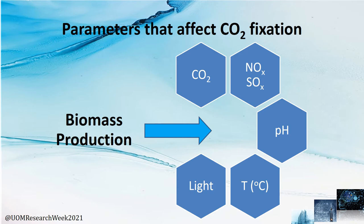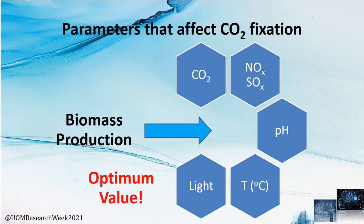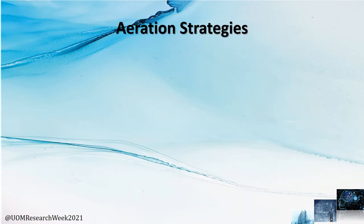The most common cultivation parameters considered are carbon dioxide level, nitrogen oxides, sulfur oxides, pH, temperature, and light intensity. There is an optimum value for each of these parameters where the microalgae can grow. Regarding the aeration strategy — since we are capturing CO2, it is very important to understand how we supply CO2 to the media, which is termed the aeration strategy.